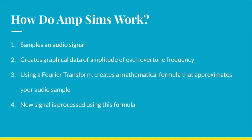Amp sim software has existed for a few decades, but how does it work? First, it samples an audio signal, then it creates graphical data of the amplitude of each overtone frequency from that signal. Then, using what's called a Fourier transform, the software creates a mathematical formula that approximates your audio sample. Finally, a new audio signal is processed using this formula. Amp sim software also recreates speakers and cabinets using impulse response technology, and simulates microphones using a graph of their frequency response.